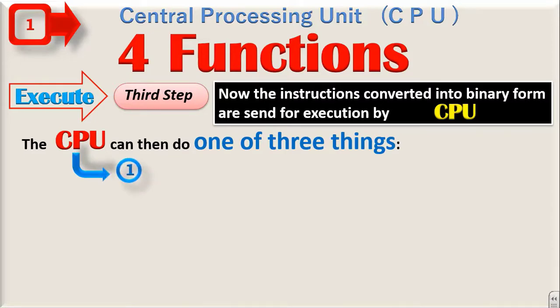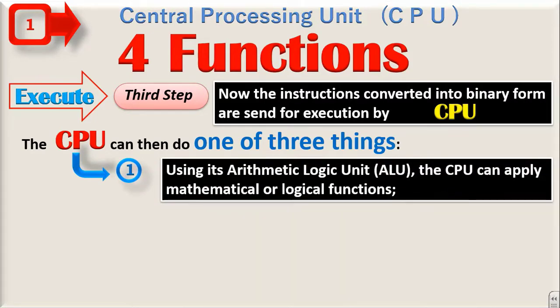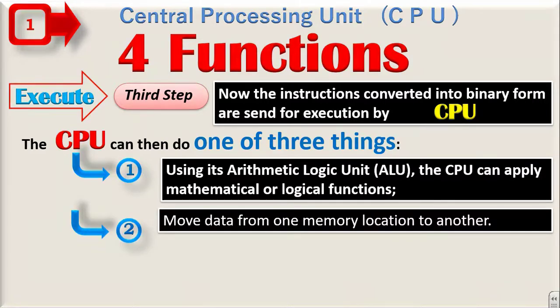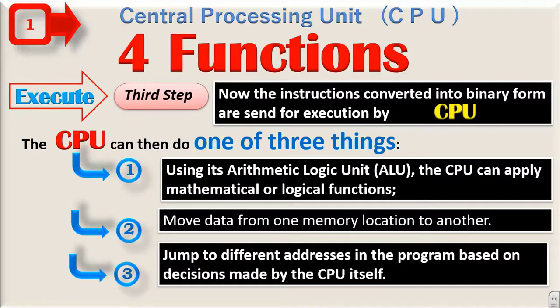The CPU can do one of three things. First, using its arithmetic logic unit, the CPU can apply mathematical or logical operations. Move data from one memory location to another. Third, jump to different addresses in the program based on decision made by the CPU itself.